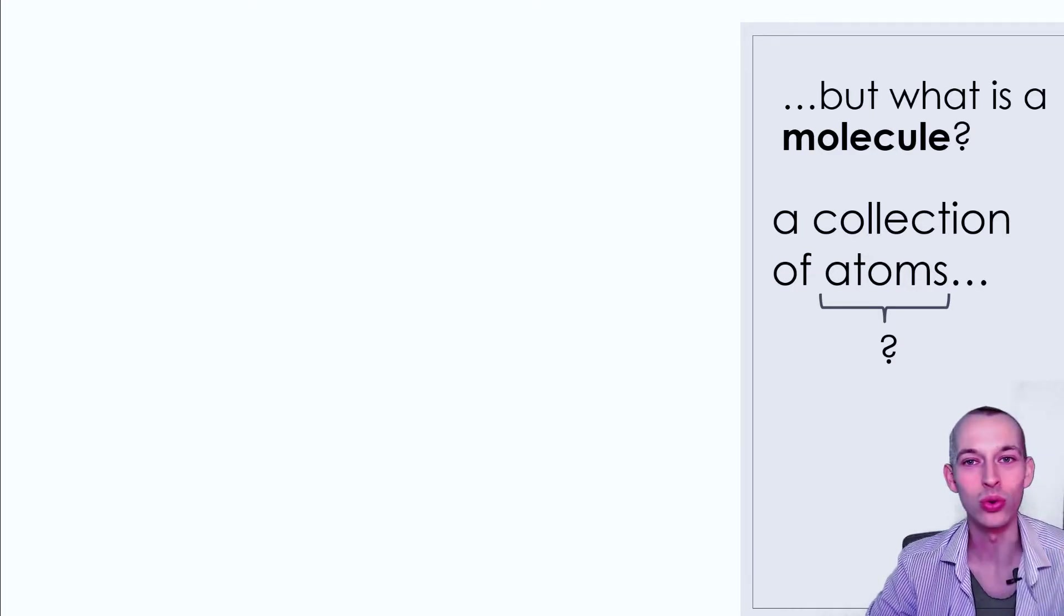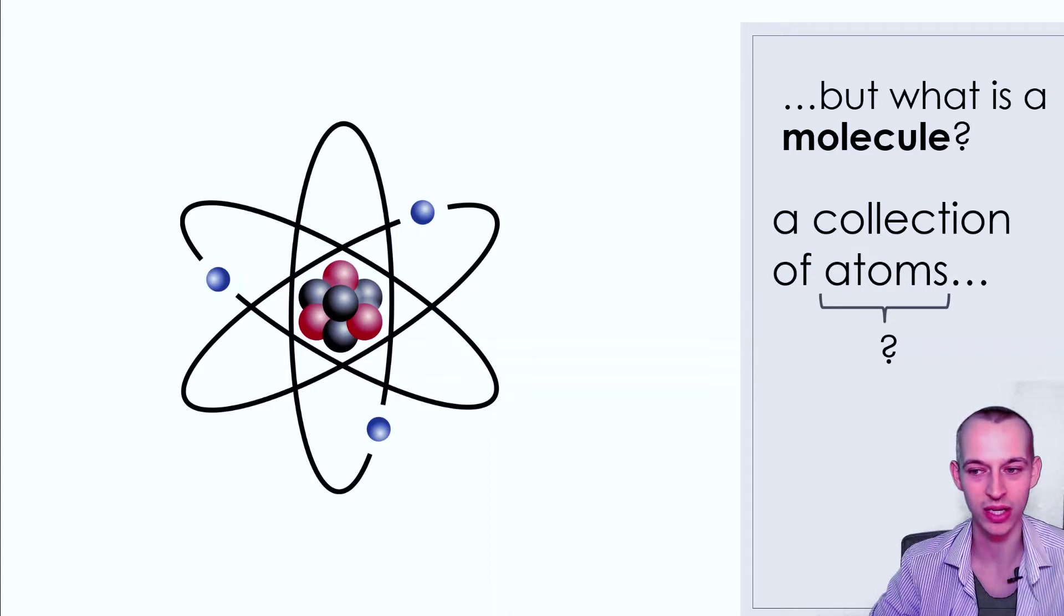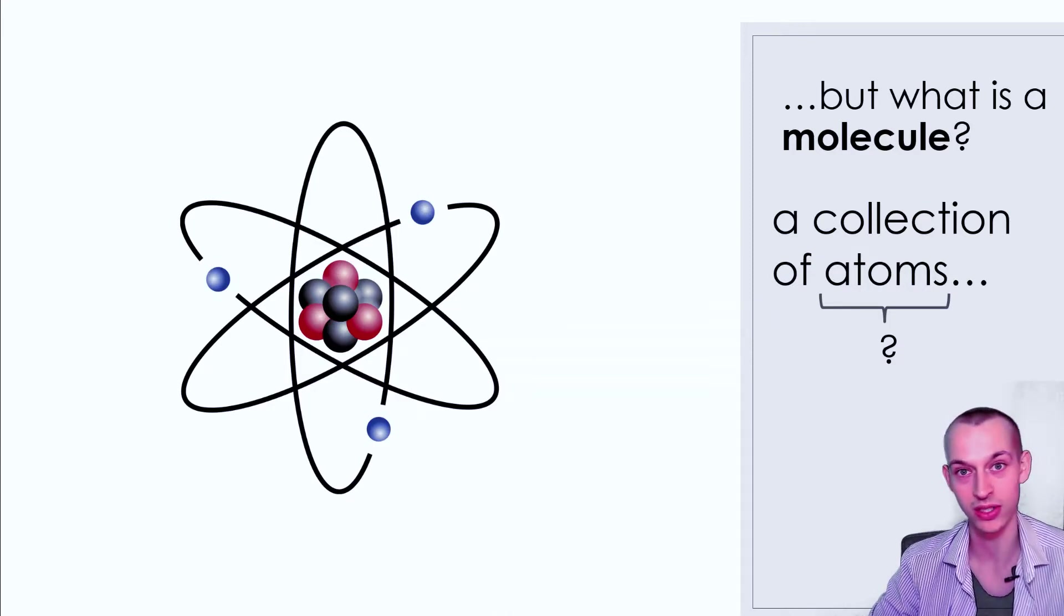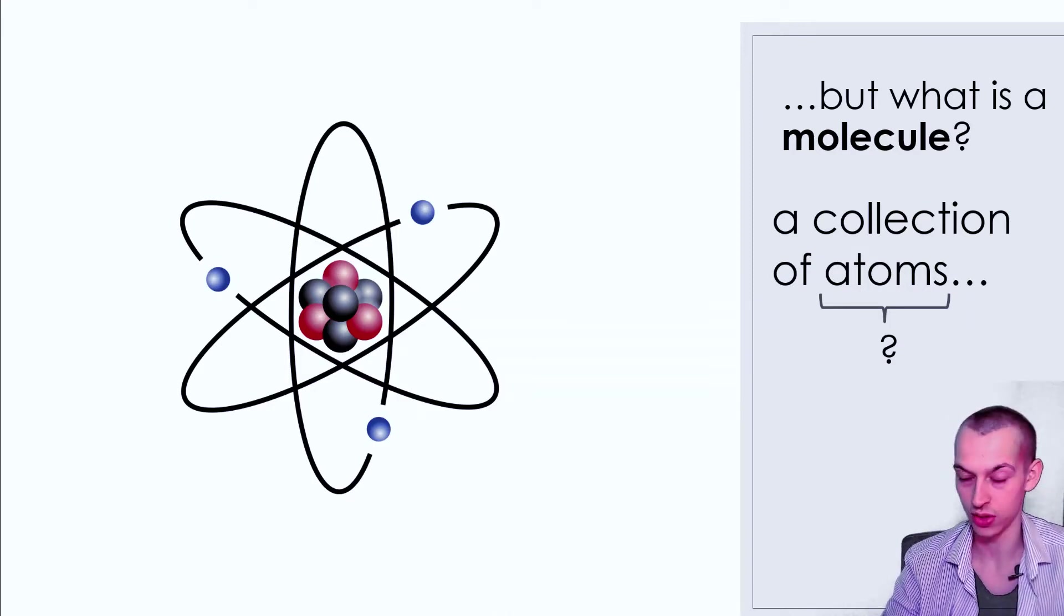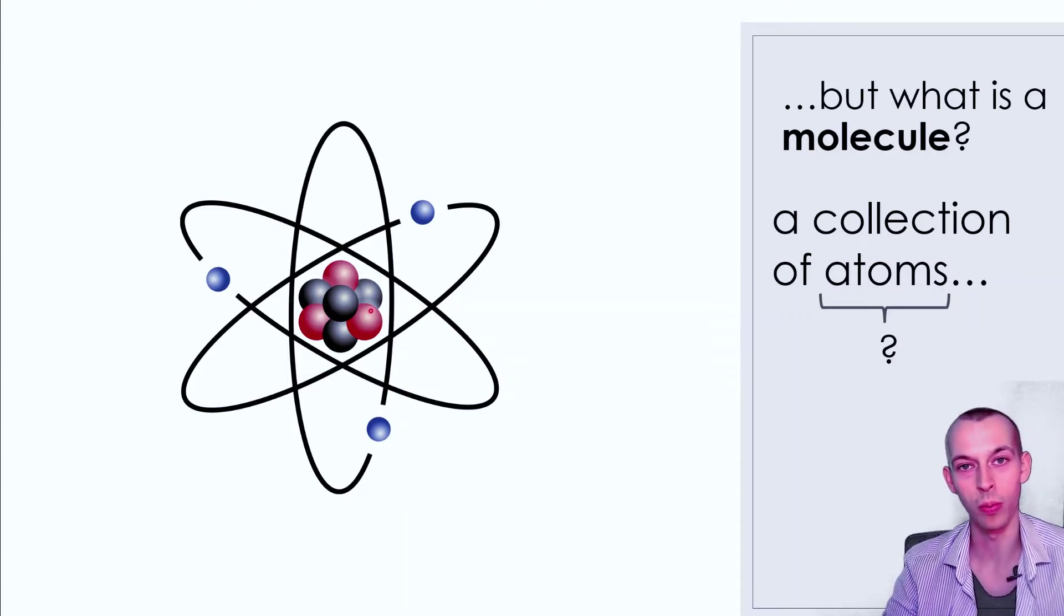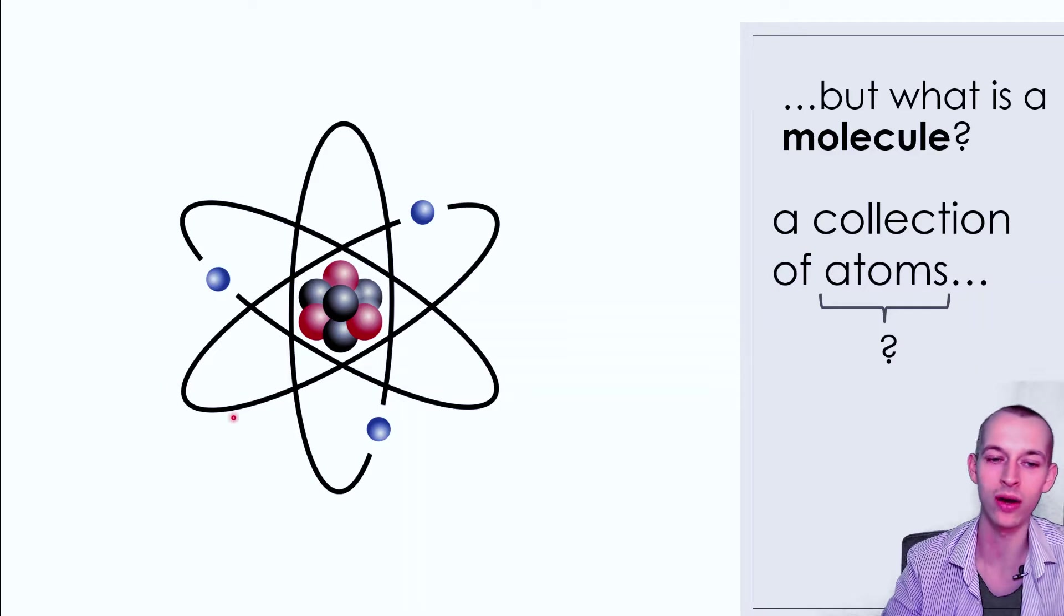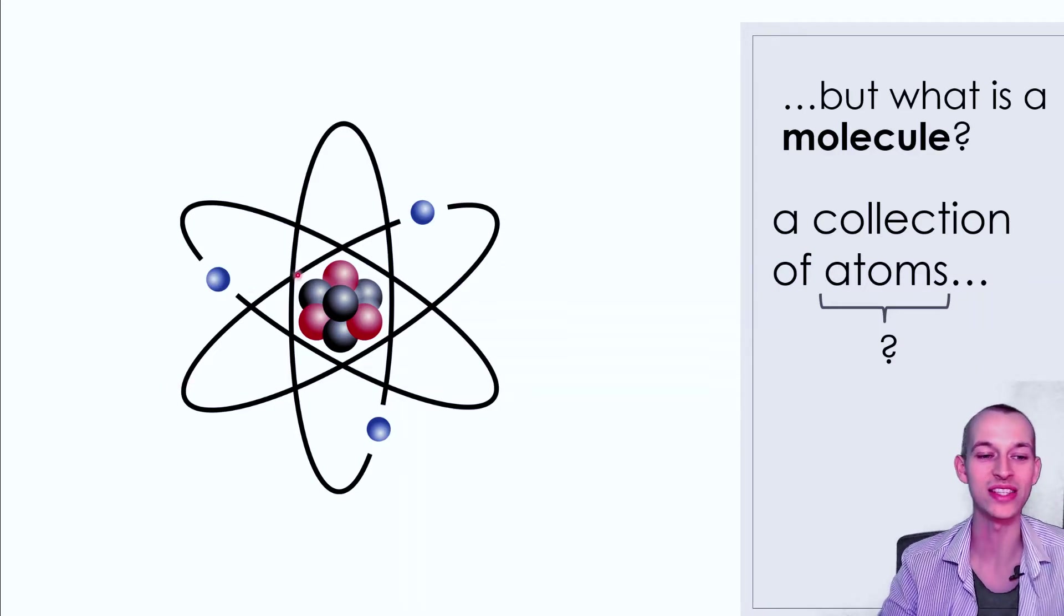If you google atomic structure or something like this, you're probably already familiar with this kind of representation of an atom. You have this heavy nucleus in the middle where all the positive charge is located, and then you have the negatively charged electrons whizzing around the nucleus in these fixed orbits, much like planets orbit stars.